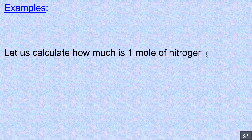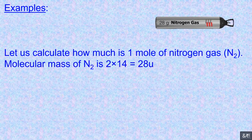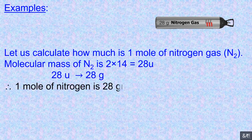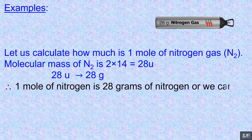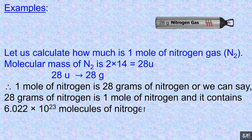Let us calculate how much is one mole of nitrogen gas, N₂. Molecular mass of N₂ is 2×14 = 28 U. 28 U implies 28 grams. Therefore, one mole of nitrogen is 28 grams of nitrogen, or we can say 28 grams of nitrogen is one mole of nitrogen, and it contains 6.022 × 10²³ molecules of nitrogen.